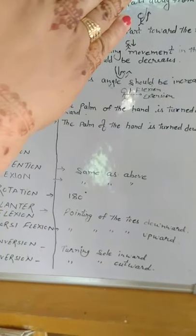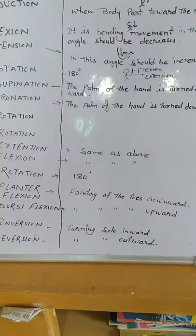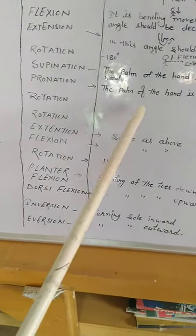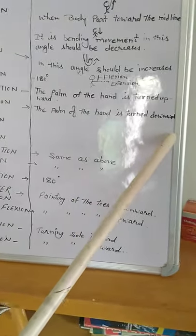And next is pronation. When palm is downward. See pronation, the palm of the hand is turned downward.